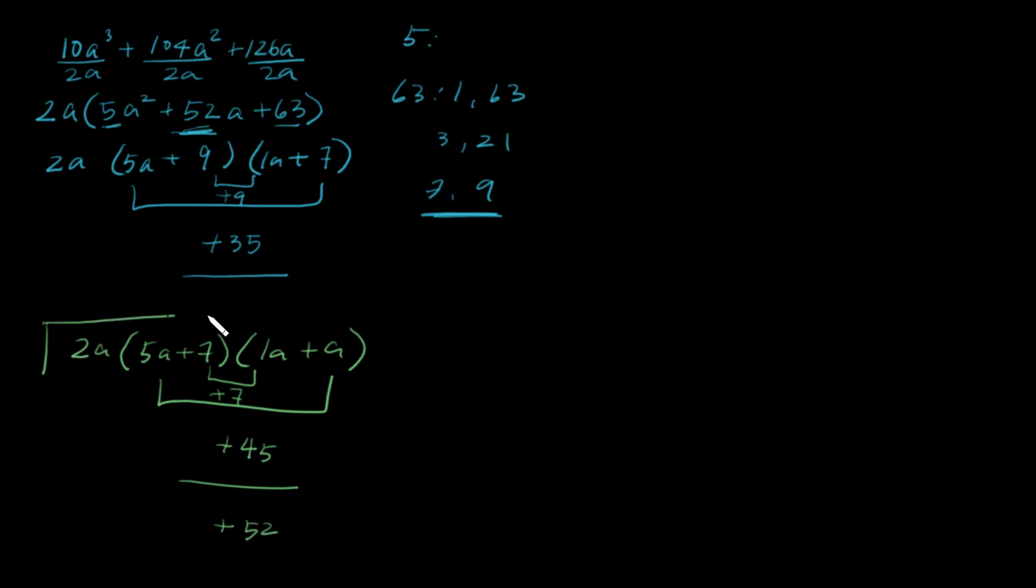So here we have the factors of our original trinomial right here. If you did FOIL and then multiply the trinomial by 2a, you would get that original trinomial. Okay, good job guys.